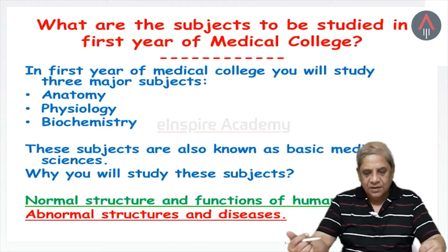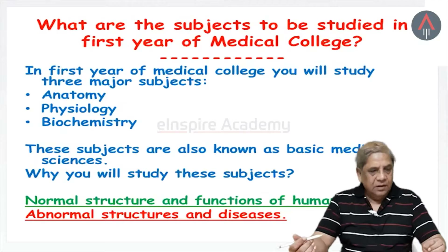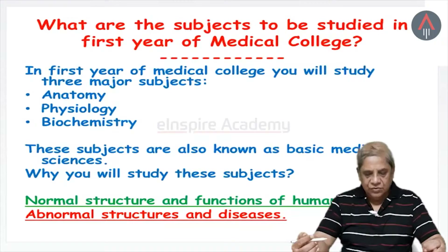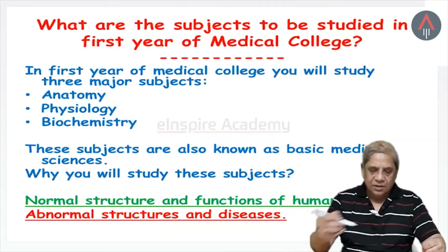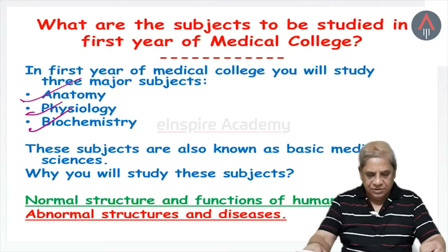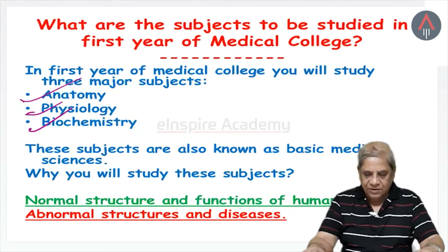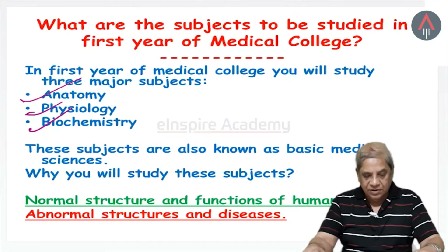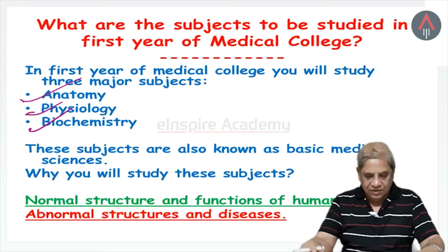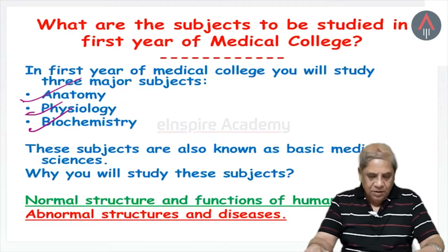Since you have come to medical college, a question must be in your mind: what are the subjects to be studied in the first year? In the first year of medical college you will study three major subjects — anatomy, physiology, and biochemistry. When we look at the subject of anatomy, this is the subject which will tell you how our body is constituted — the structure of our body, different systems such as respiratory, cardiovascular, and nervous system, and the structure of muscles, nerves, vessels, and organs.